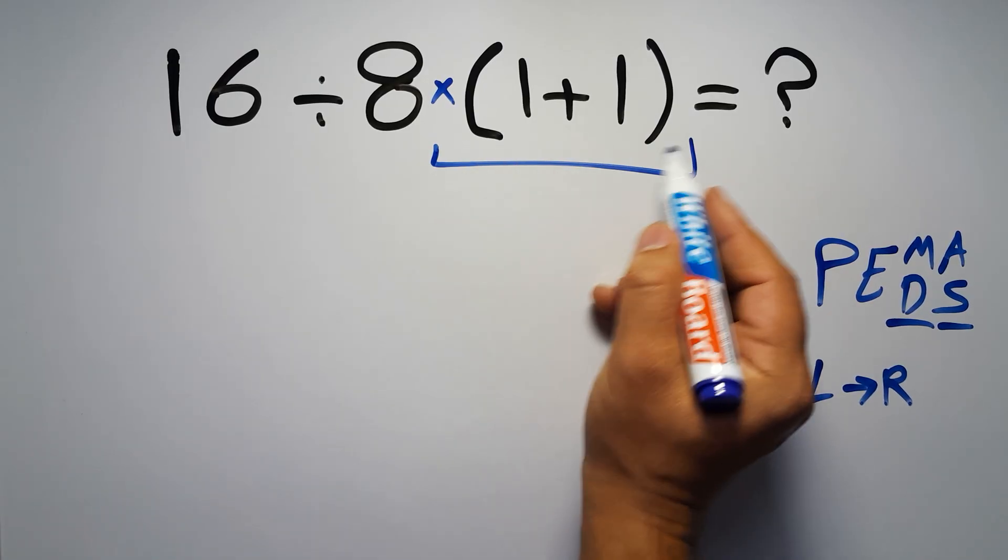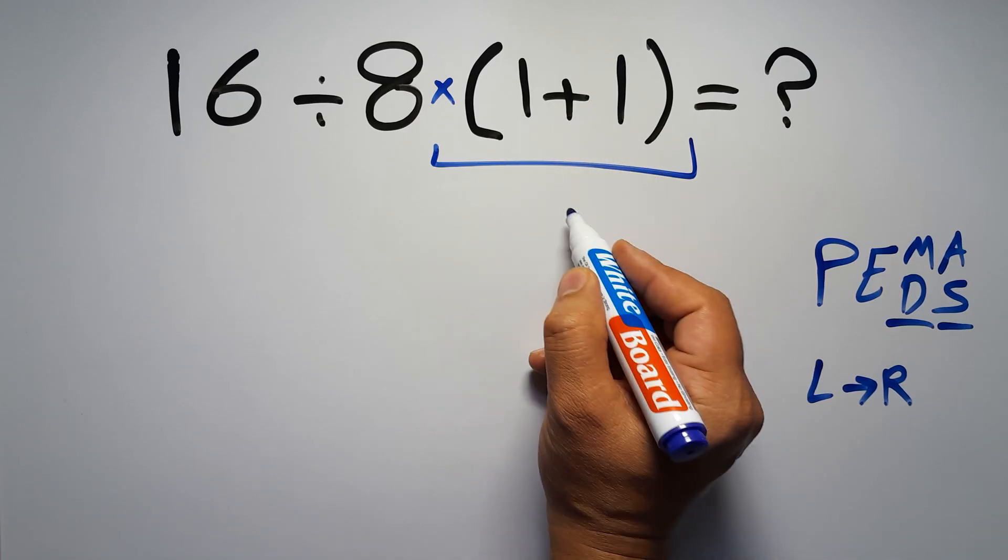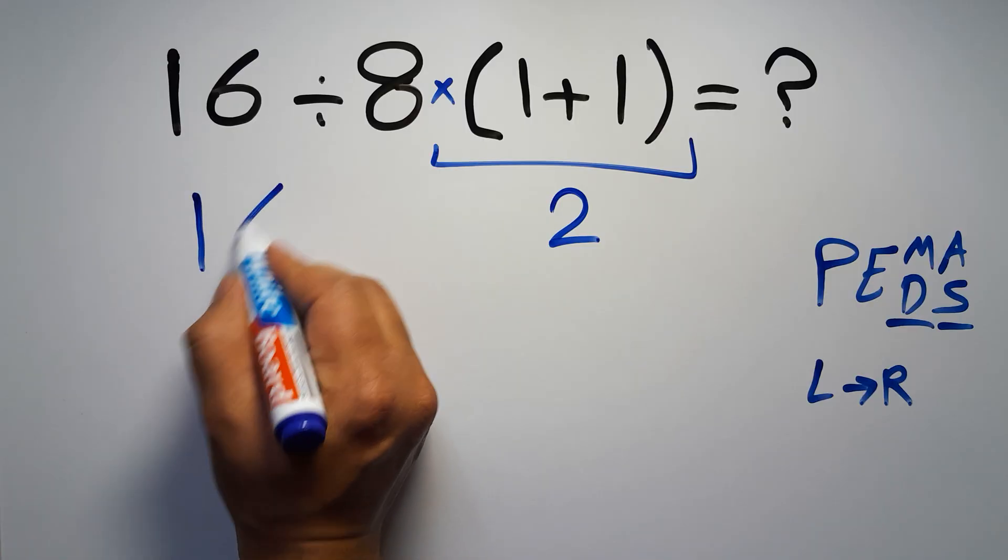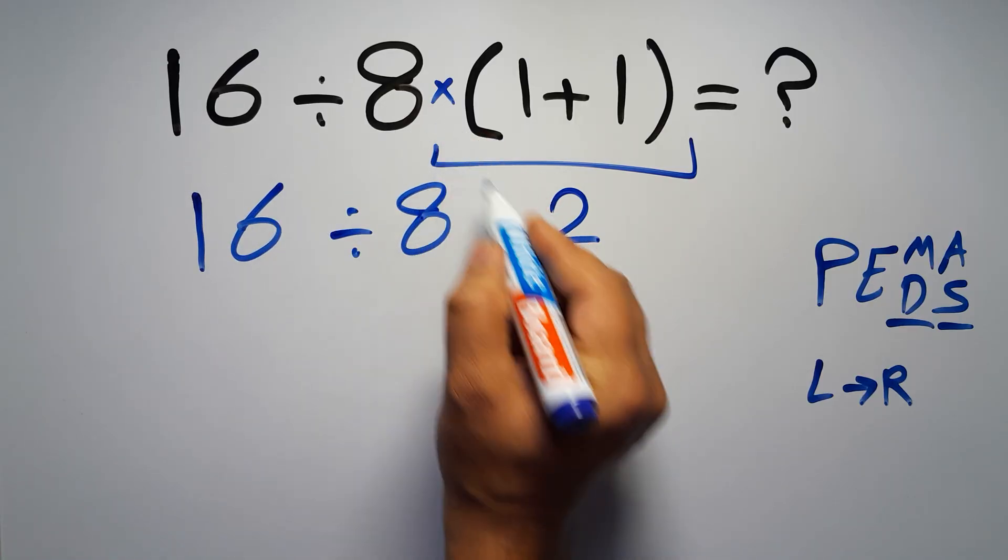So, first this parentheses. Inside this parentheses, we have 1 plus 1, which equals 2. So, we have 16 divided by 8, then times 2.